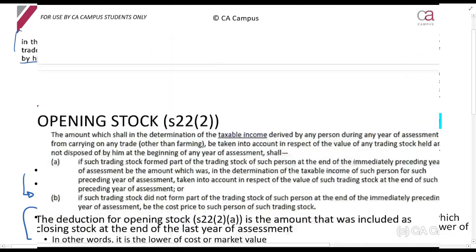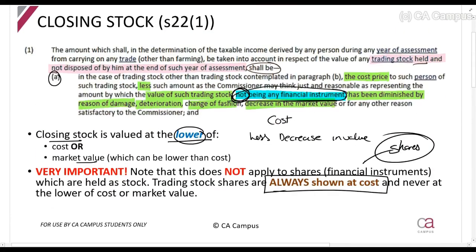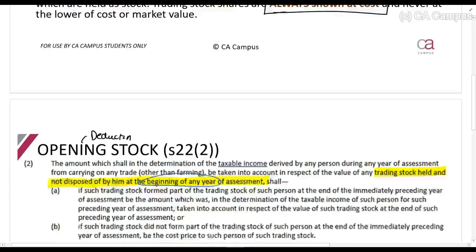Opening stock under Section 22(2) is a deduction for us. It says the amount to be taken into account in respect of the value of any trading stock held and not disposed of at the beginning of any year of assessment. So the beginning of any year of assessment is opening stock, whereas closing stock was at the end of the year.